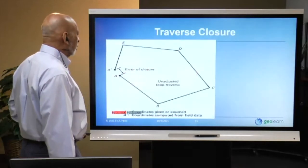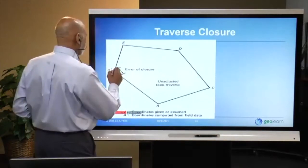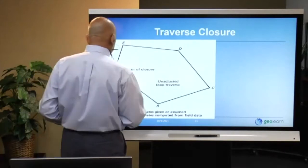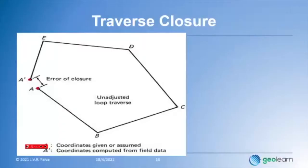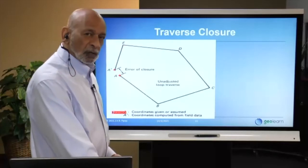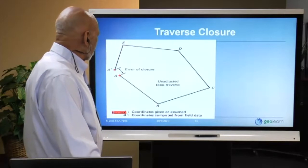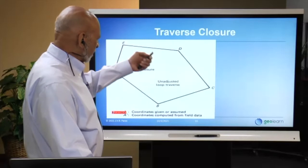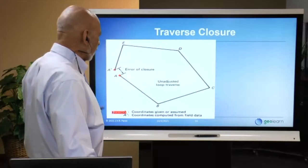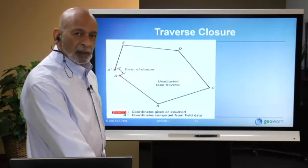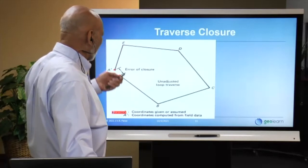Once you finish the traverse with unadjusted data, you'll find it doesn't close perfectly — giving you an error of closure that helps evaluate the quality of your work. However, this check only helps detect big blunders and evaluate random error. If all distances are systematically too large by 30 or 300 ppm, the configuration would still show the same kind of gap and you wouldn't detect that systematic error.